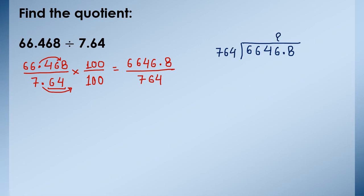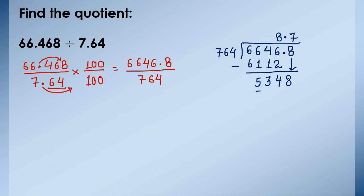So we have to divide 6646.8 by 764. 764 eights are 6112. Subtract them. 6 minus 2 is 4, 4 minus 1 is 3, and 6 minus 1 is 5. Now put this decimal up and bring down 8. 764 sevens are 5348. Subtract them. 0 is left now. So we got quotient equals 8.7.